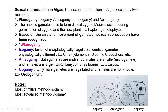Next we move on to sexual reproduction in algae. Sexual reproduction occurs by two methods: planogamy and aplanogamy. Planogamy can be divided into three types: isogamy, anisogamy, and oogamy. The haploid gametes fuse to form a diploid zygote. Meiosis occurs during germination of the zygote, and the new plant is a haploid gametophyte.